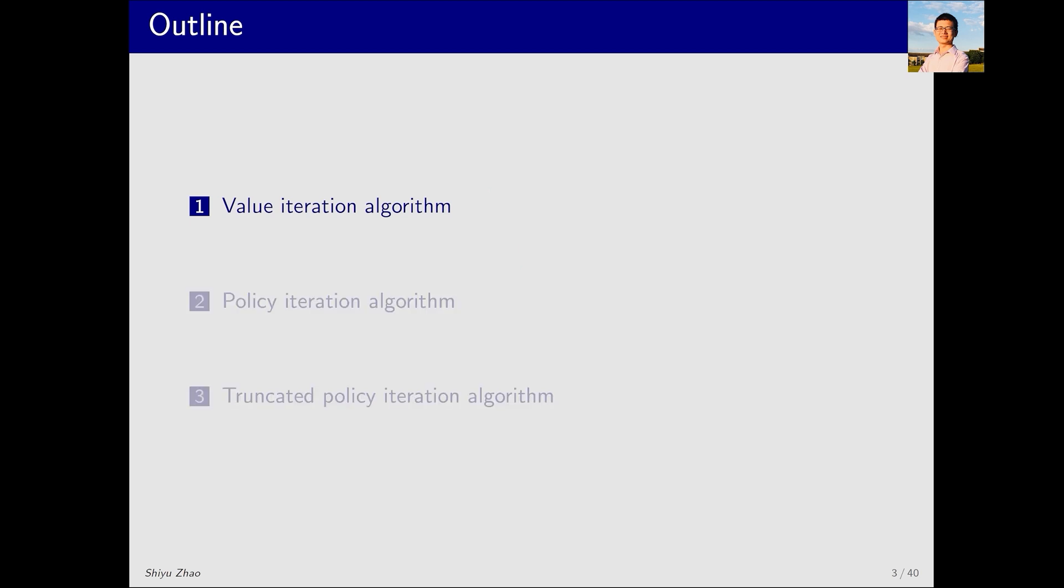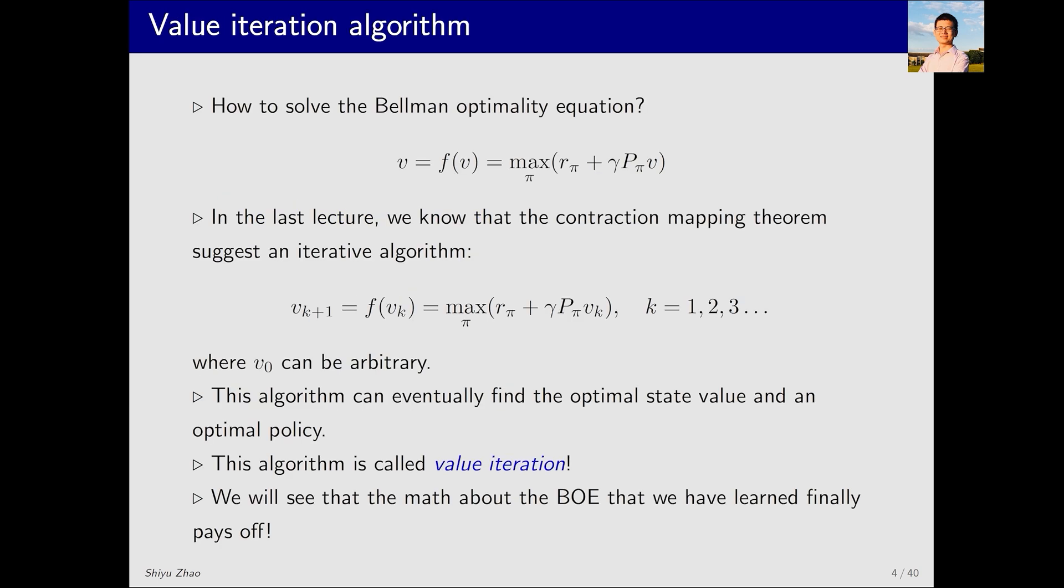First, let's talk about value iteration. In the last lecture, we already introduced the Bellman optimality equation, whose matrix vector form is like this. I hope you are already familiar with it. If not, it's necessary to go back to the last lecture to learn it first. Otherwise, it will be very challenging to understand the algorithm today.